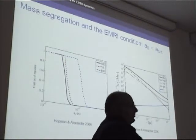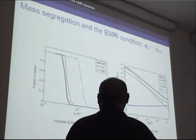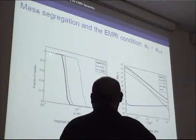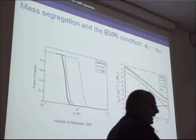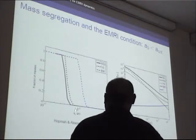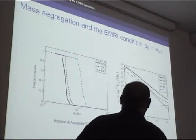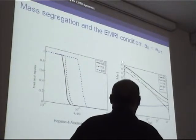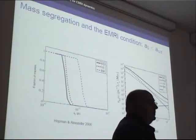Moving quickly to mass segregation: as Clovis said, in order to spiral in, your star must be closer to the black hole than some critical radius. Monte Carlo-derived curves are so close to a step function that you can really think about it as a single number. The rate is essentially just a question of how many objects you pack into this critical radius, which comes out at about a hundredth of a parsec. A calculation of mass segregation shows that on this scale, black holes start to dominate the population. The question is whether we have evidence for mass segregation in the galactic center to calibrate these calculations.